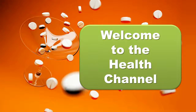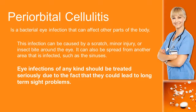Welcome to the Health Channel. Periorbital cellulitis is a bacterial eye infection that can affect other parts of the body. This infection can be caused by a scratch, minor injury, or insect bite around the eye. It can also be spread from another area that is infected, such as the sinuses.